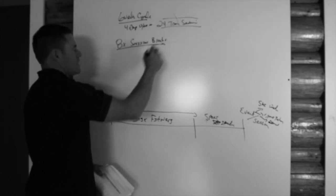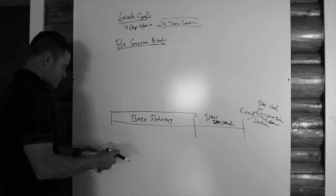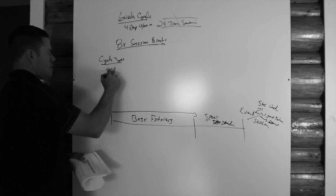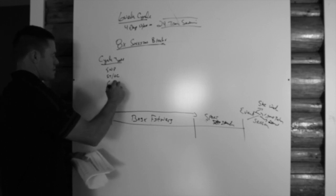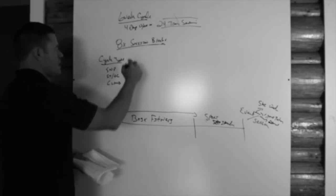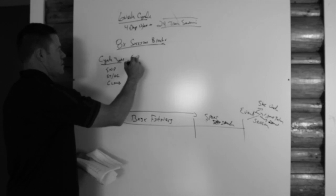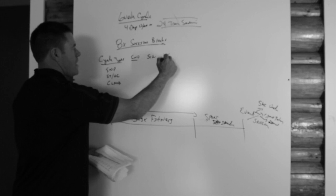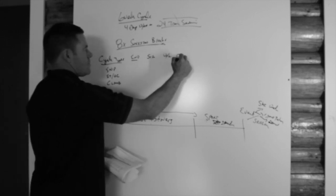This is how the ratios are done. A cycle type. Endurance, strength and work capacity, climbing. And this is the number of endurance sessions. This is the number of strength, the number of work capacity, and the number of climbing.